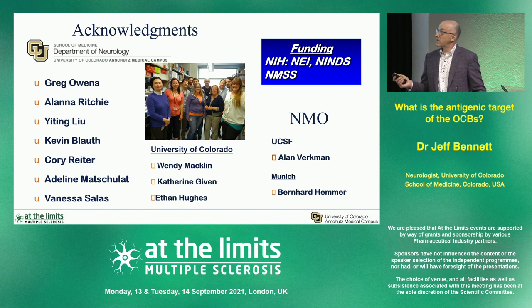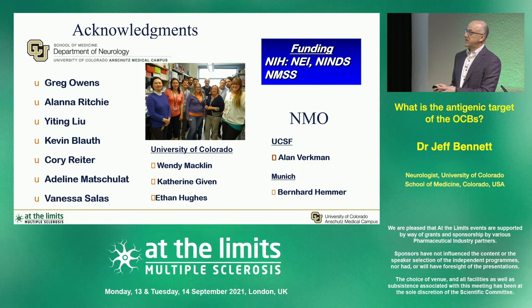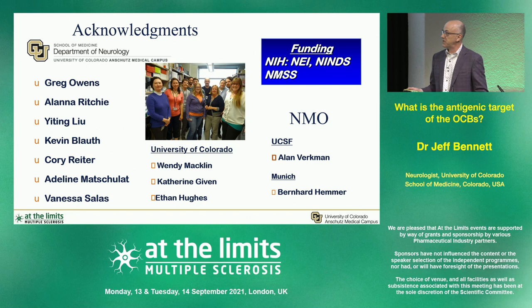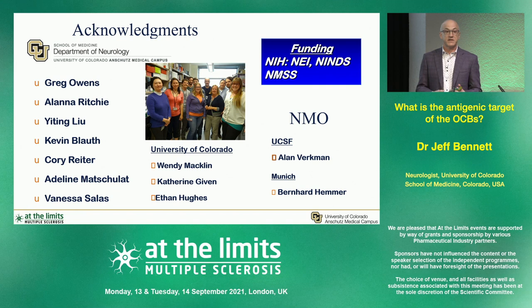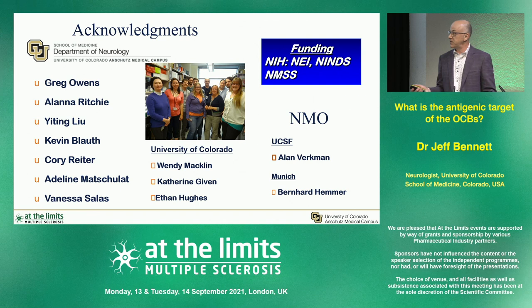Before I conclude, I'd like to thank Greg Owens in particular — a long-standing collaborator who has worked tirelessly on this process — as well as Alana Ritchie, E.T. Leulu who did the cell slice assays, Kevin Blau who did the original spinal cord assay, and other members of the lab. Current collaborators Wendy Macklin and Catherine Given are working on the remyelination and demyelination projects with us, and Ethan Hughes has used the development of these antibodies to develop a novel model of cortical demyelination in vivo using two-photon microscopy. Thank you all for your kind attention.